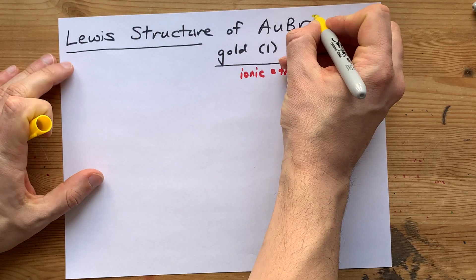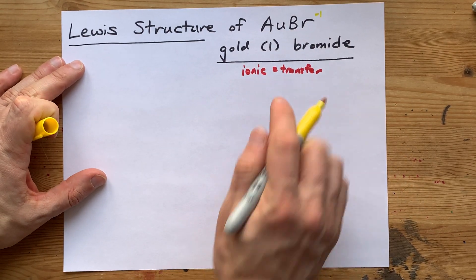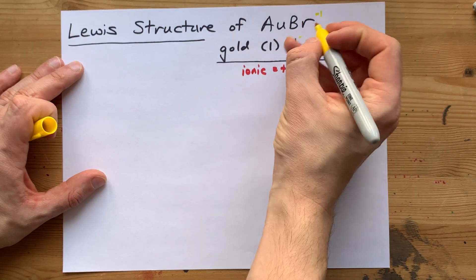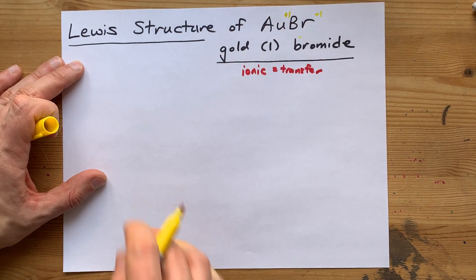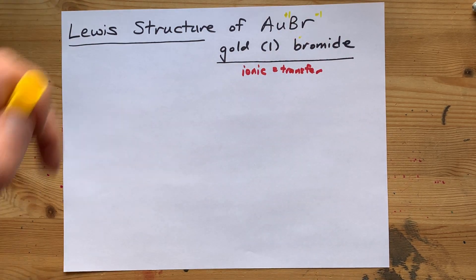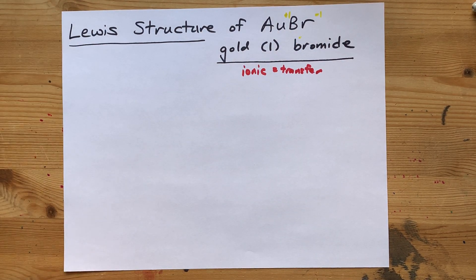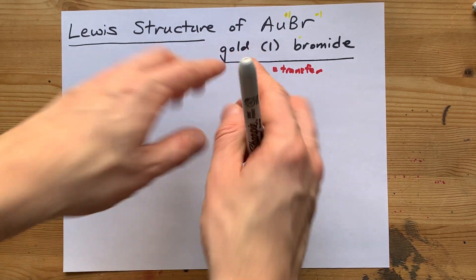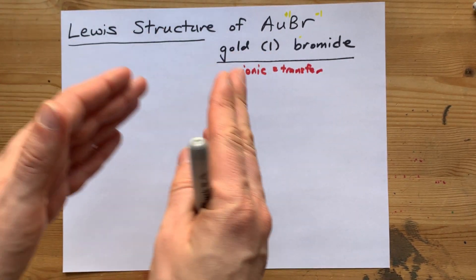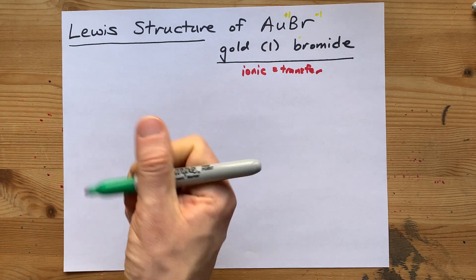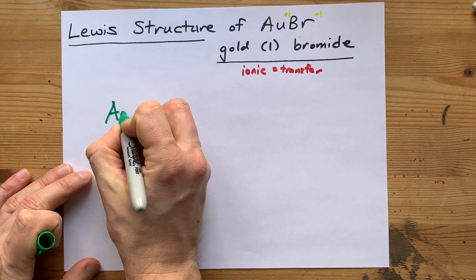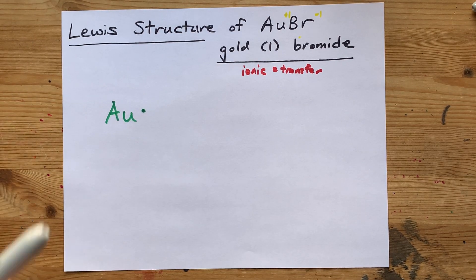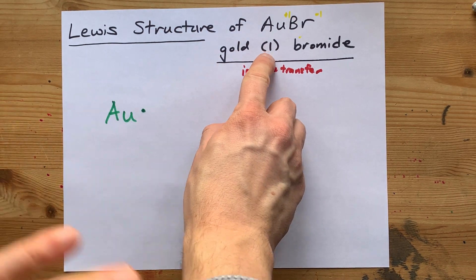If bromine has a charge of minus 1, then in order for 1 gold to bond with 1 bromine, the gold needs a charge of positive 1. That would help those charges cancel each other out. The charge on gold is the same as the number of valence electrons to draw it with to start. Here's a gold atom with its 1 valence electron, because the charge is positive 1.